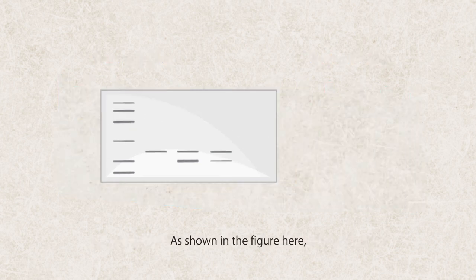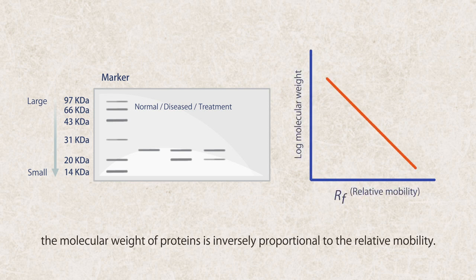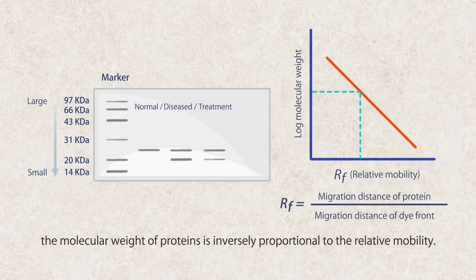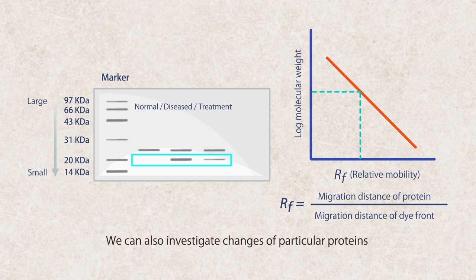As shown in the figure here, the molecular weight of proteins is inversely proportional to the relative mobility. We can then compare the position of bands with the marker to evaluate the size of proteins. We can also investigate changes of particular proteins under normal, diseased, or treatment conditions.